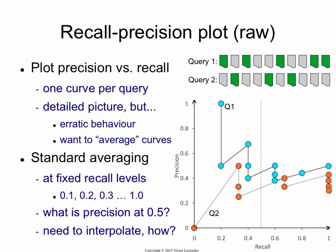So you get a bunch of points, and if you wanted to connect them with a line you could, as shown here. But remember that these lines don't actually exist — they are ephemeral. We only really have the points; the lines just connect points of the same color.